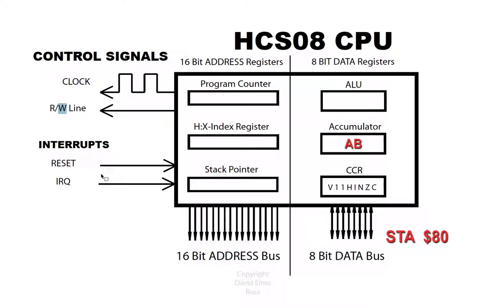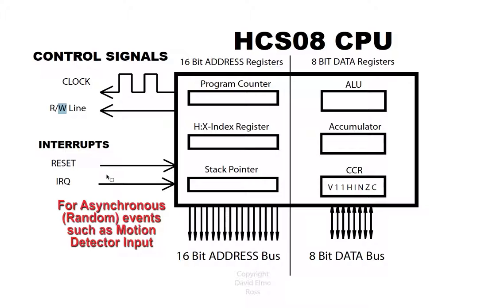The last thing to briefly discuss is interrupts. On just about every PC or computer, there's a reset, and all it does is drop the voltage low and reset your computer back to a known state. Whether it's resets, IRQs, or whatever, it's a voltage that drops low and executes a special bit of software called an interrupt service routine, which will be covered in a later course.